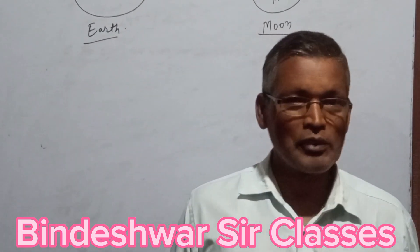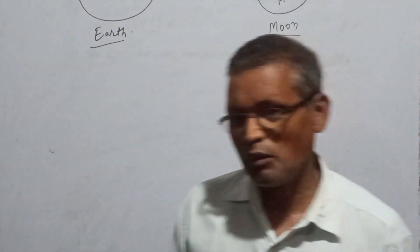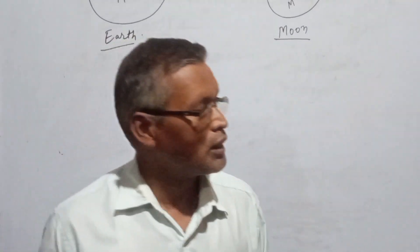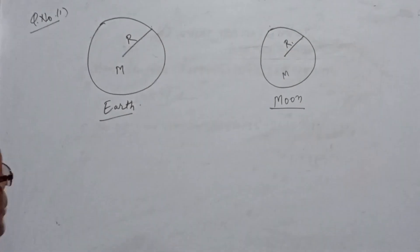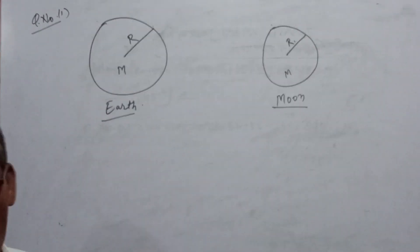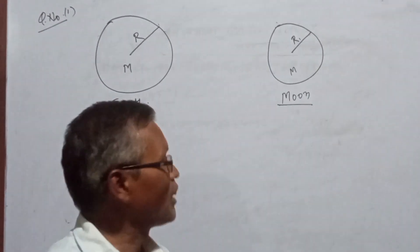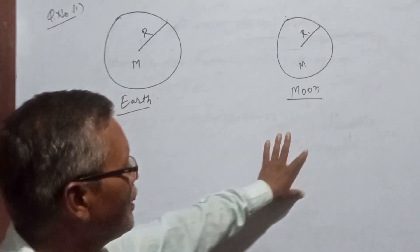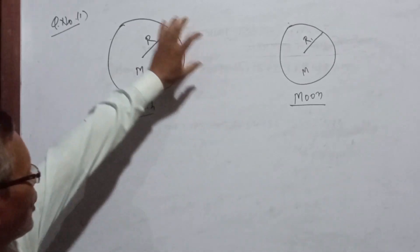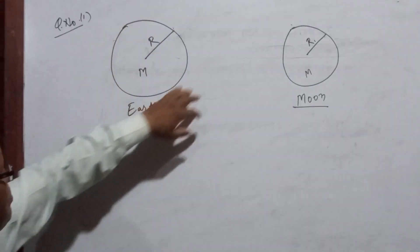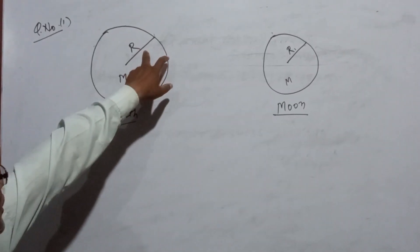Welcome. Today we are again starting a new chapter with numerical problems. We will write numerical values. There are some big calculations. When numerical values are formed, then we will understand the meaning of the radius R.